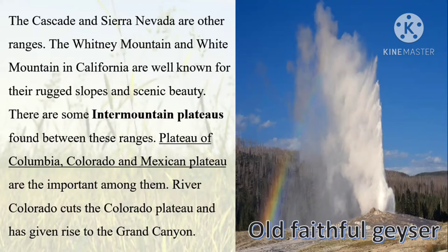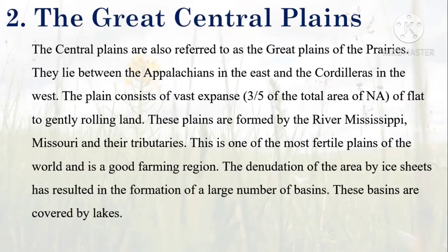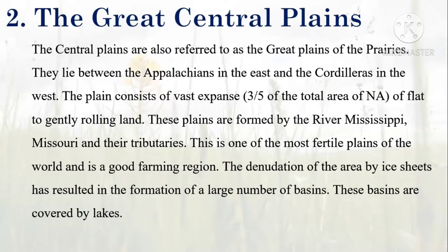The Whitney Mountain and White Mountain in California are well known for their rugged slopes and scenic beauty. There are some intermountain plateaus found between these ranges. The central plains are also referred to as the great plains of the prairies. They lie between the Appalachians in the east and the cordilleras in the west. These plains are formed by the rivers Mississippi, Peak, and Missouri and their tributaries, and this is one of the most fertile plains of the world.